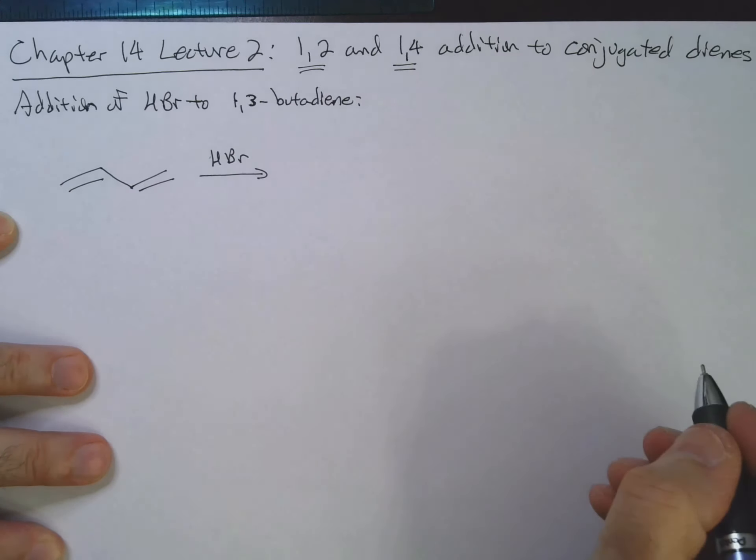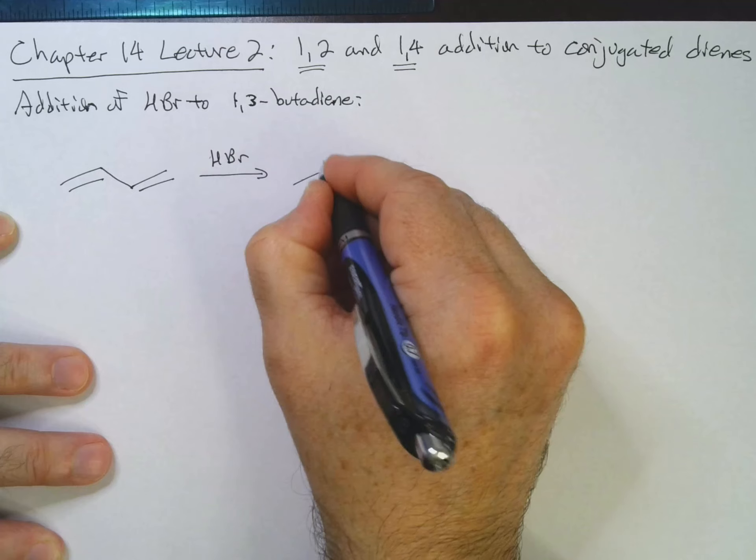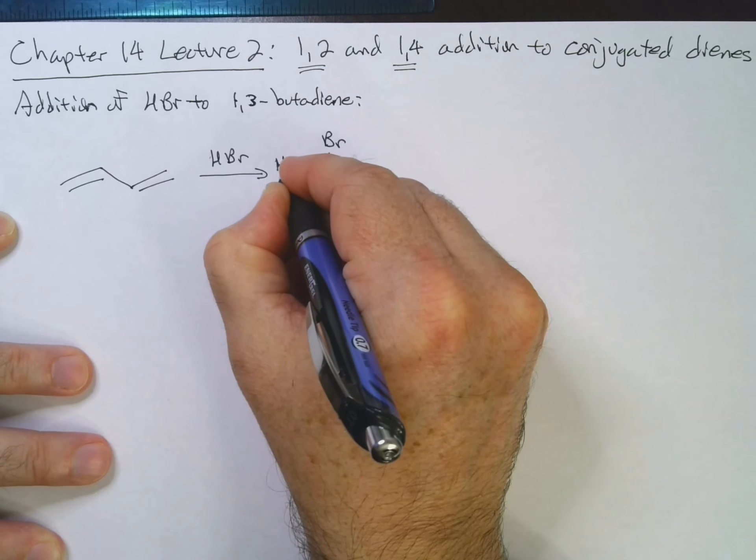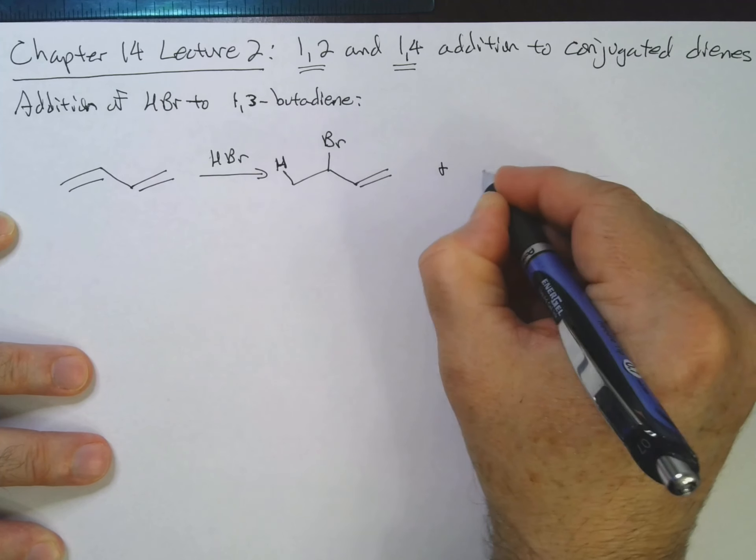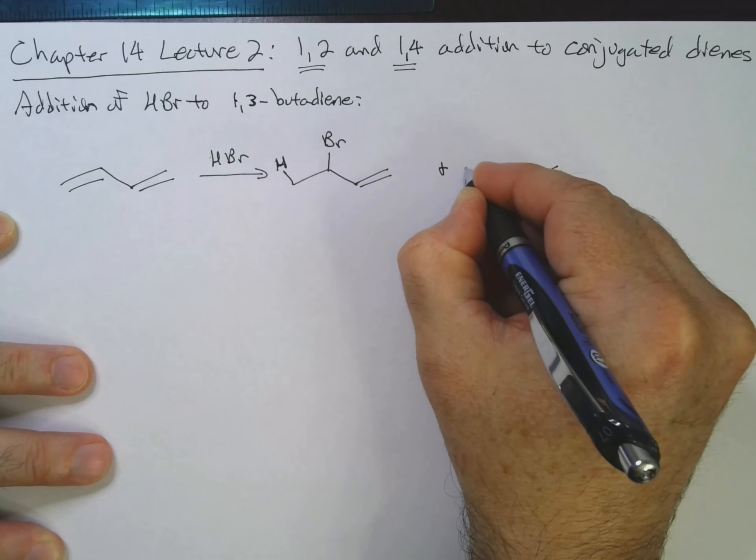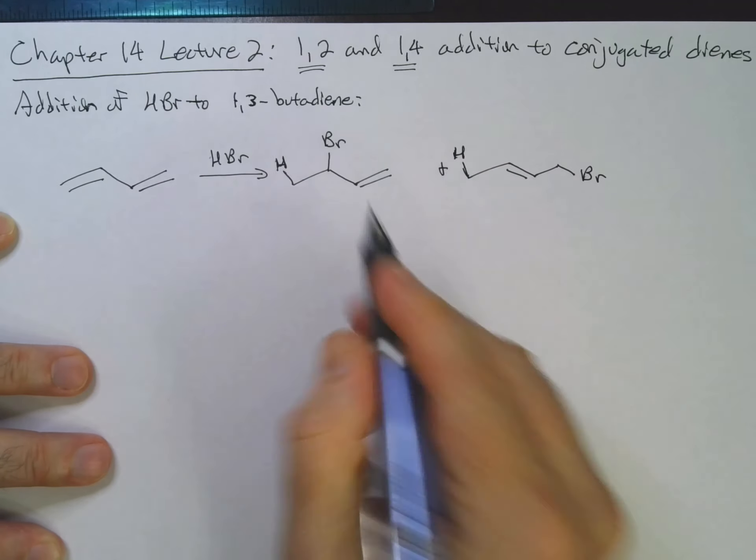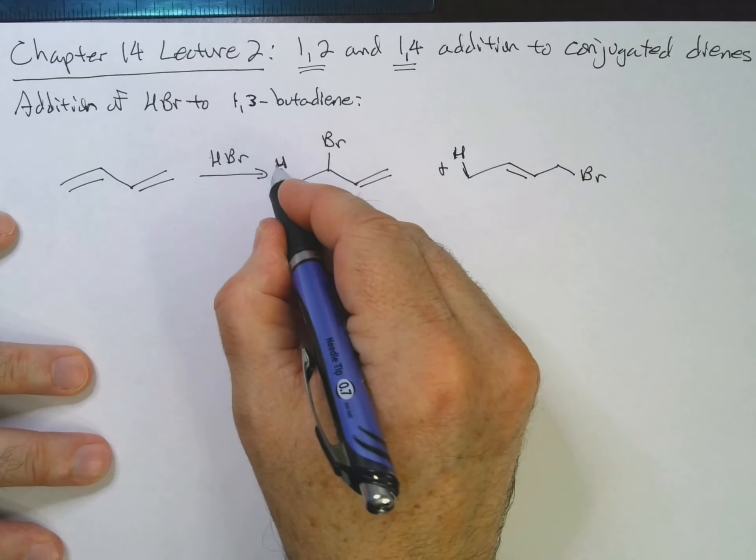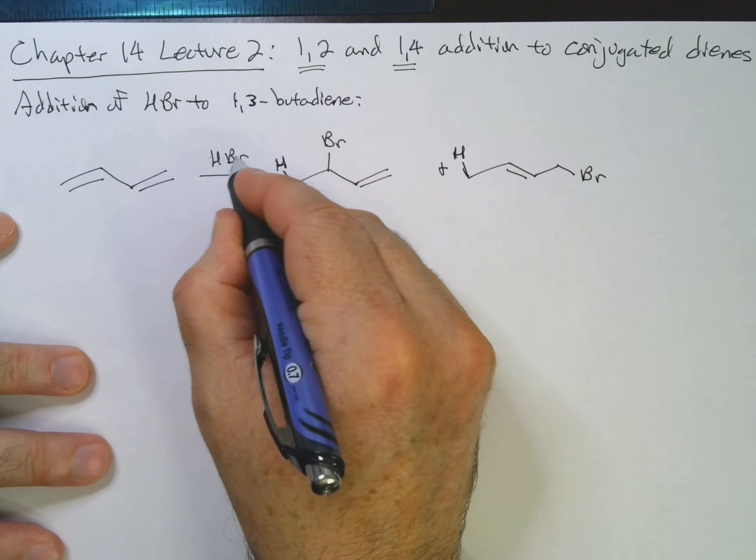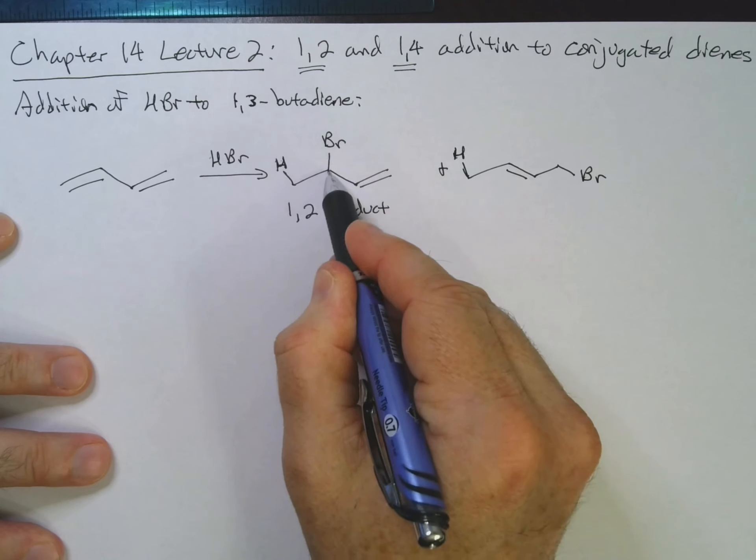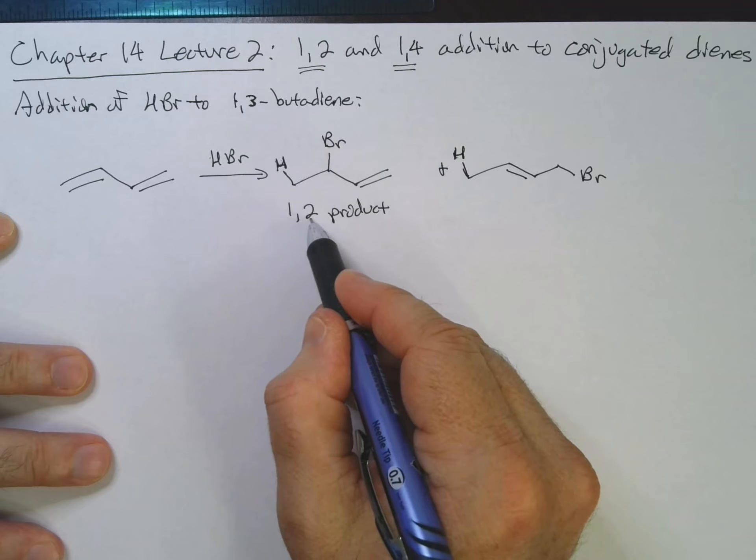Now, it turns out that we can get two different products. So I'm showing the hydrogen that is added just to illustrate where the two parts of the HBr go. We could get the H on carbon 1 and the bromine on carbon 2. That would be the 1,2 product.